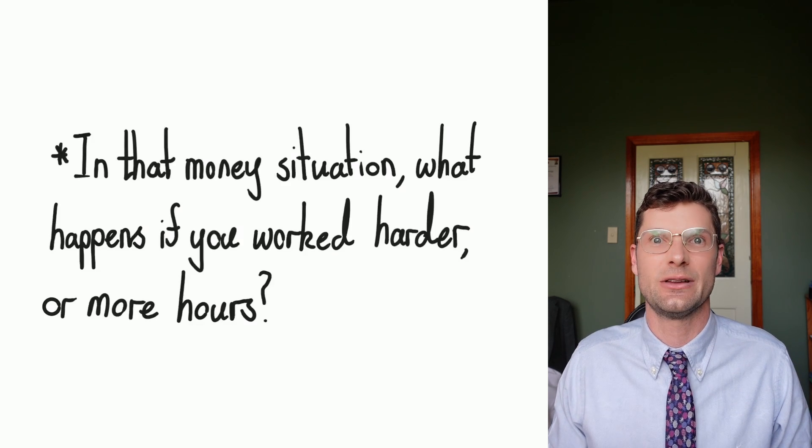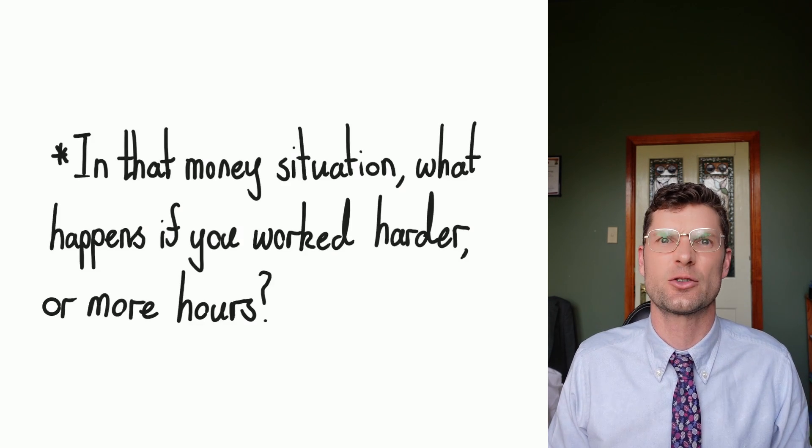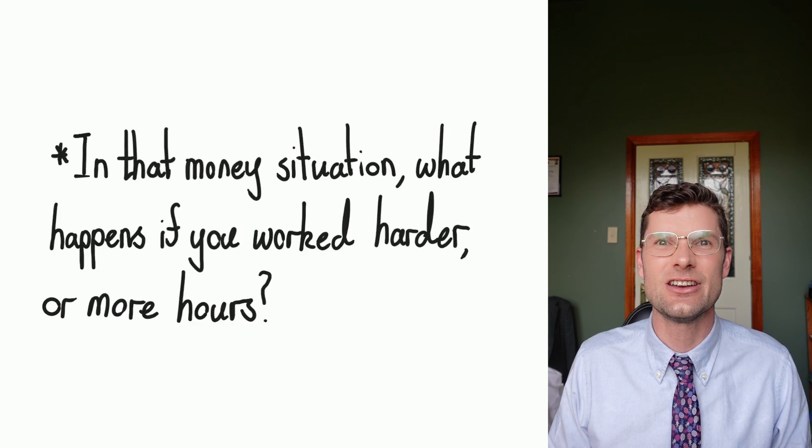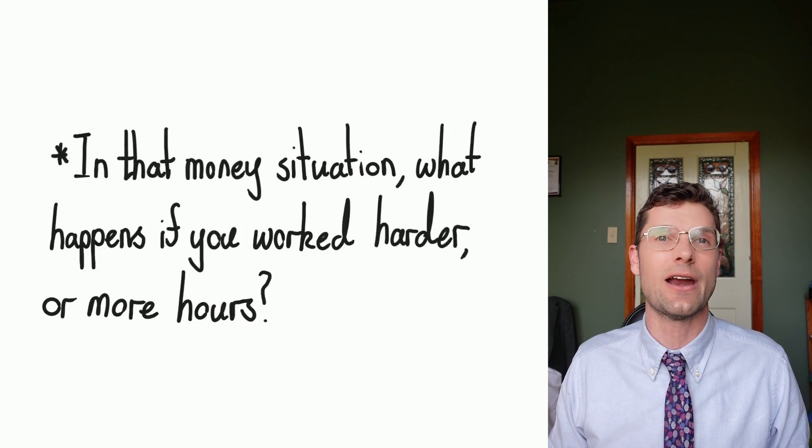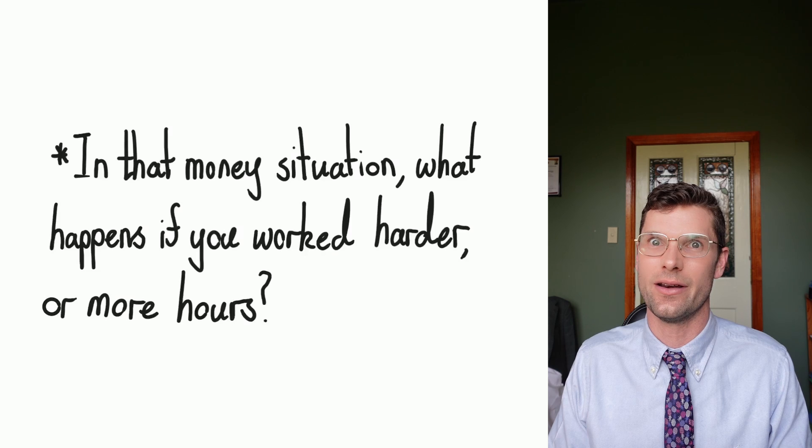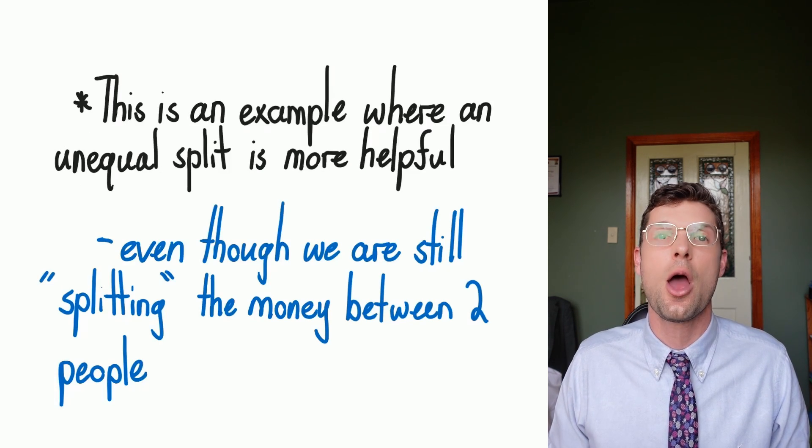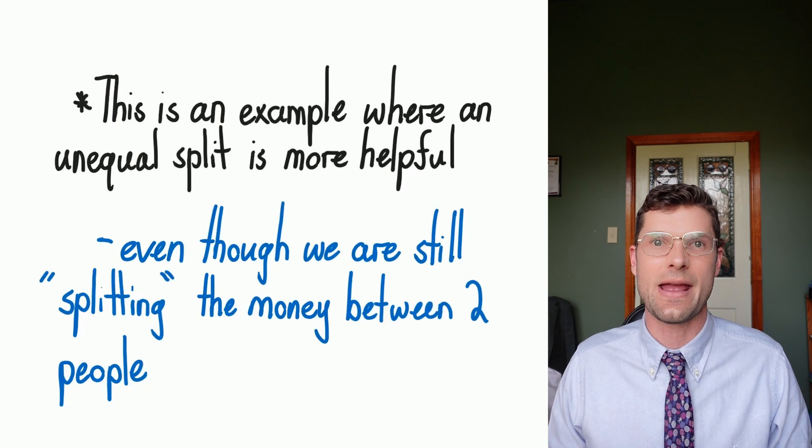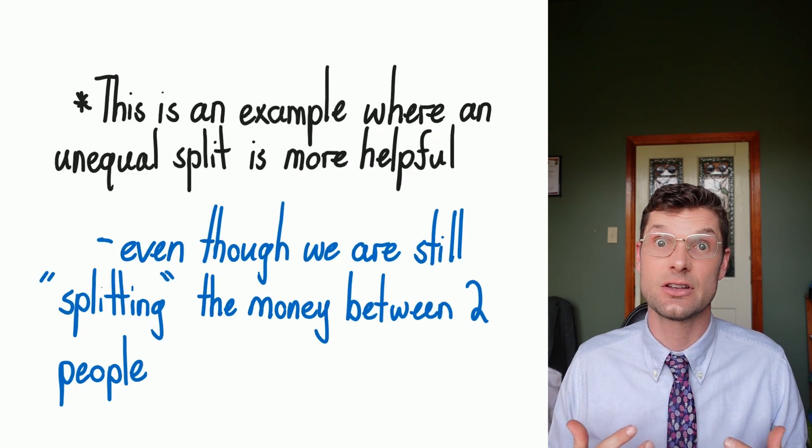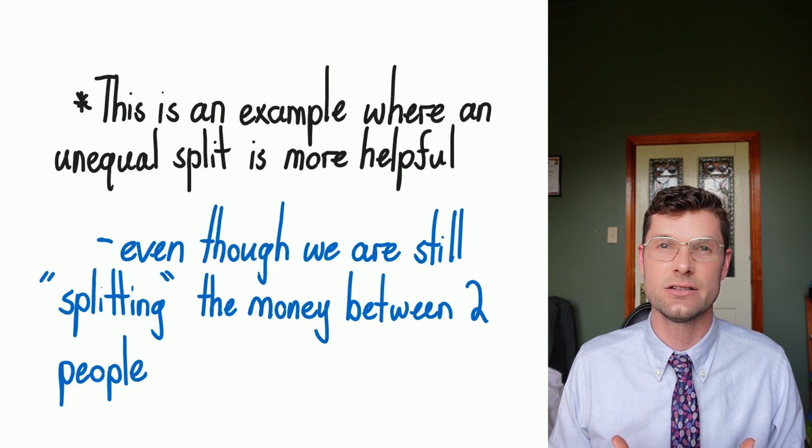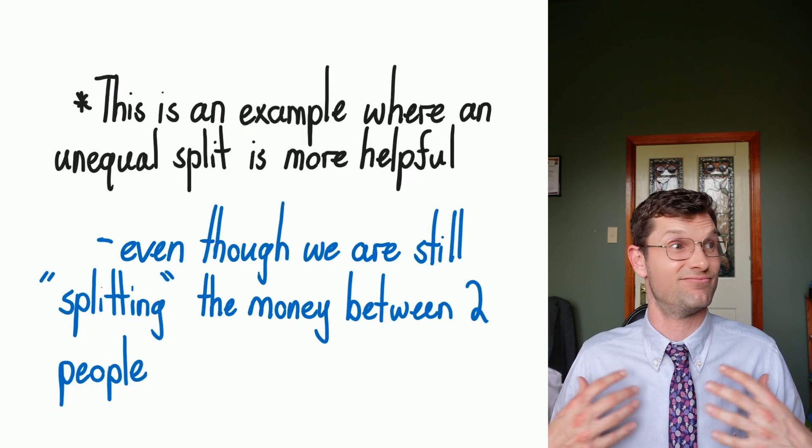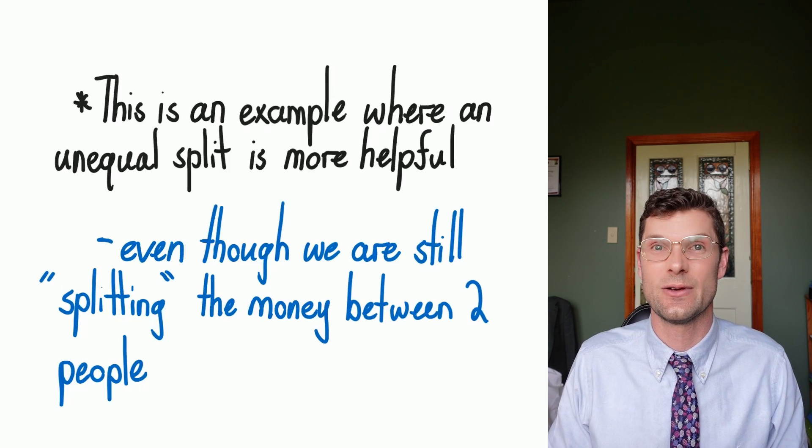But sometimes we don't wanna split something evenly. What if you worked way harder than your friend in that last example? Why should they get the same amount of money as you? That's where dividing by a ratio becomes really important. Because we worked harder, we still wanna split the money between two people, but we wanna have an unequal amount. It still needs to equal up to that initial $180, but I need more of the money. I did more work, so why should we get the same amount?